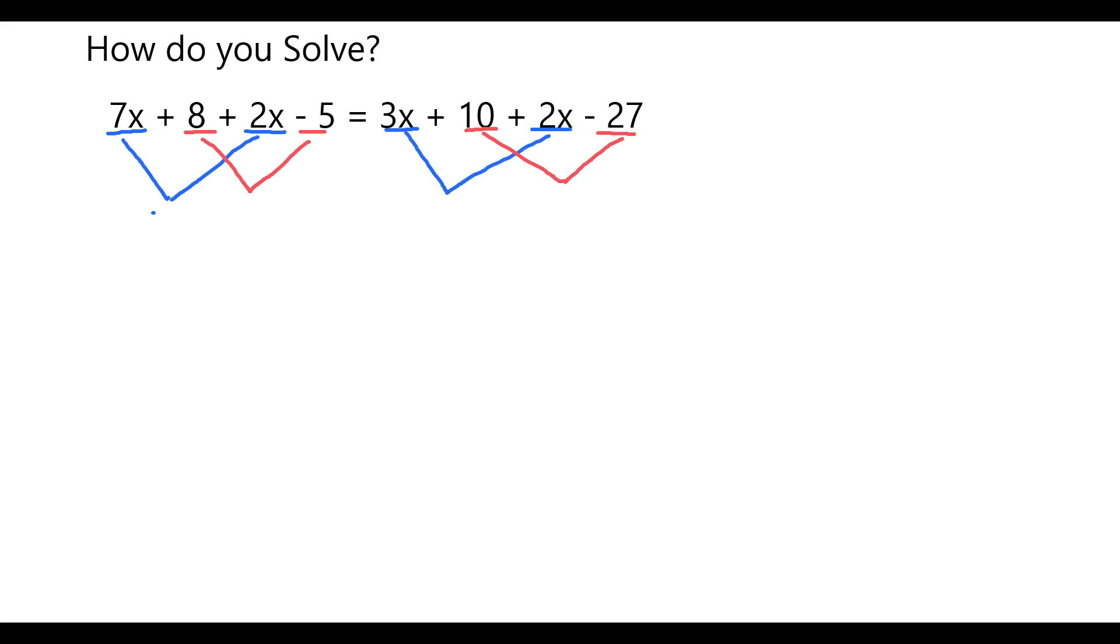On the left, 7x and 2x are like terms, and when I add them together, 7 plus 2 is equal to 9x. Then I'm going to put together my 8, and notice this is a minus 5, so I have to do 8 take away 5. So altogether, my left side simplifies to 9x plus 3.